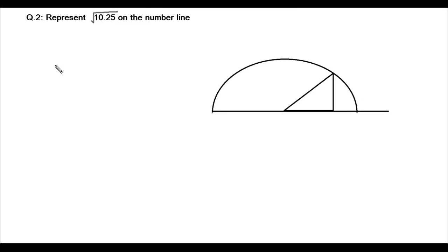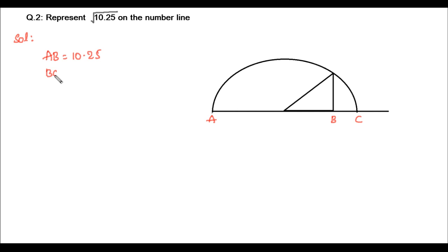Now let's look at the second question: represent square root of 10.25 on the number line. To save time, I have already drawn this. In step 1, we draw a line and mark point A. From A, at a distance of 10.25 units, we mark point B, so AB equals 10.25 units. From B, at one unit distance, we mark point C, so BC equals 1 unit. Therefore, AC equals 10.25 plus 1, which is 11.25 units.